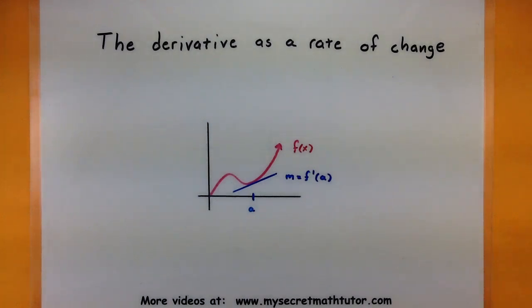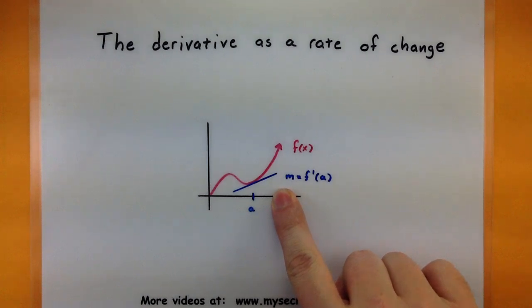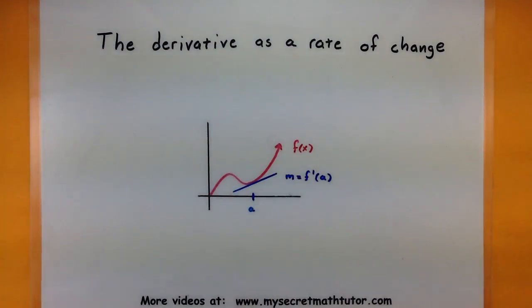So in a lot of my other videos we really look at the derivative and we see how it represents the slope of a tangent line at a given point when we have a function. Now when you start really looking at the derivative as a function itself, then it really opens up a lot of other things that you can do with this thing called a derivative.